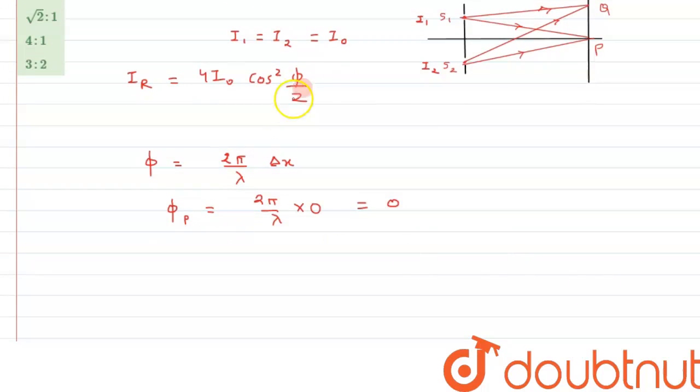Substituting this value into equation 1, we can say the intensity at point P, I_P = 4I₀ cos²(0). Since cos²(0) = 1, we get I_P = 4I₀. This is equation 2.